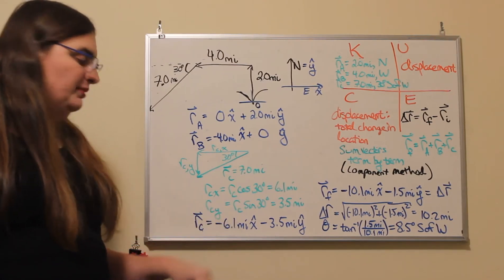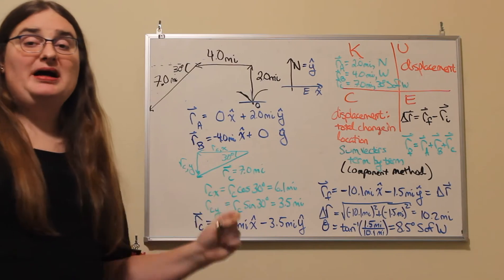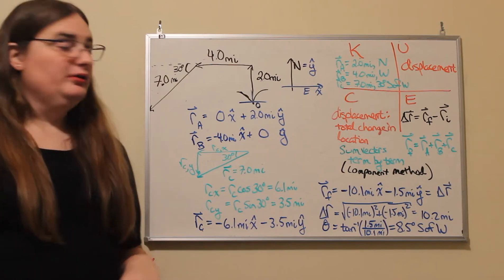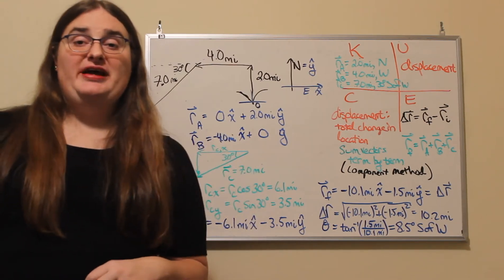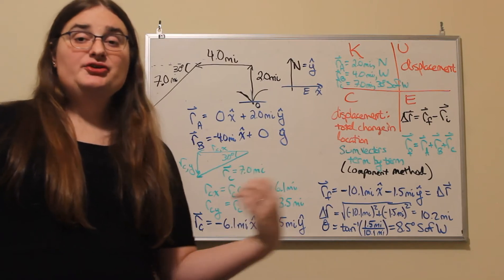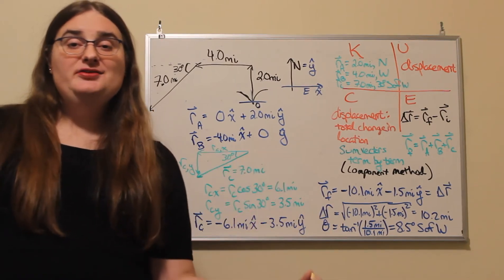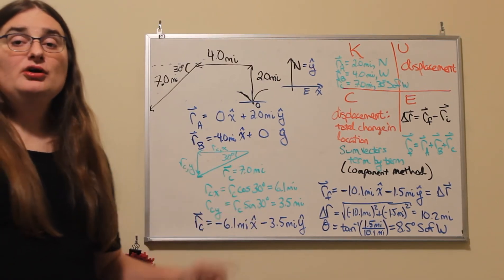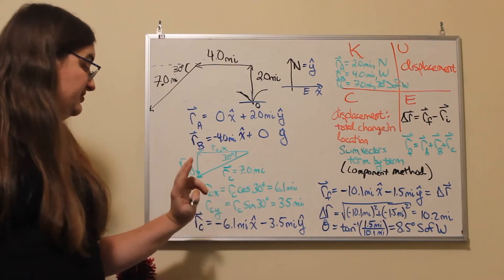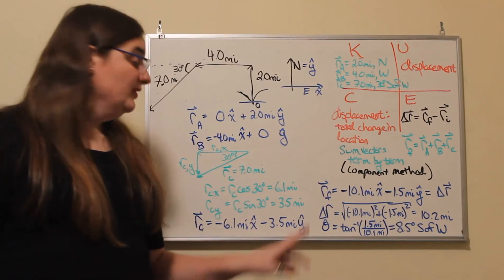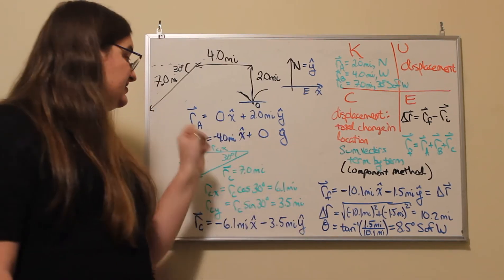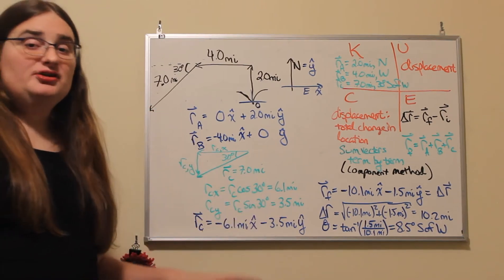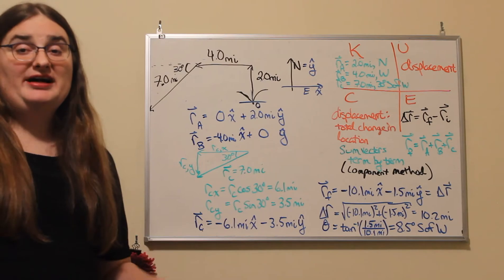So my x component then is going to be negative 6.1 miles along the x axis, negative because we're going west. Now for the y component, my y component here is opposite of my known angle, so we use the sine. Sine is opposite over the hypotenuse. So the opposite side is the hypotenuse times the sine of my angle. So I have 7 miles times the sine of 30 degrees, which gives me 3.5 miles for the size of that component. And since it's to the south, we're in the negative y direction, so we'd have negative 3.5 miles in the y direction.